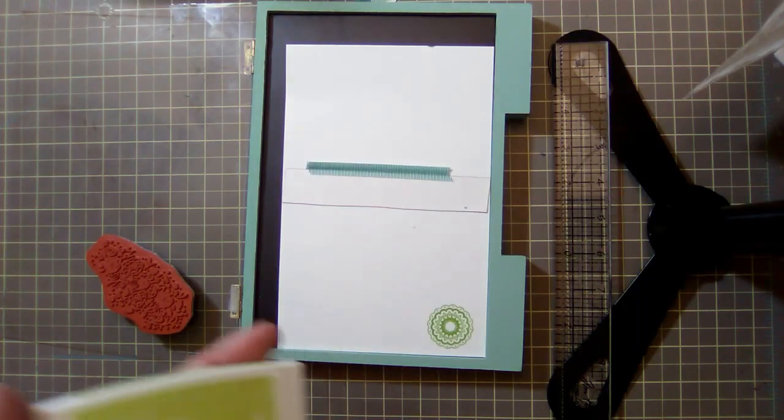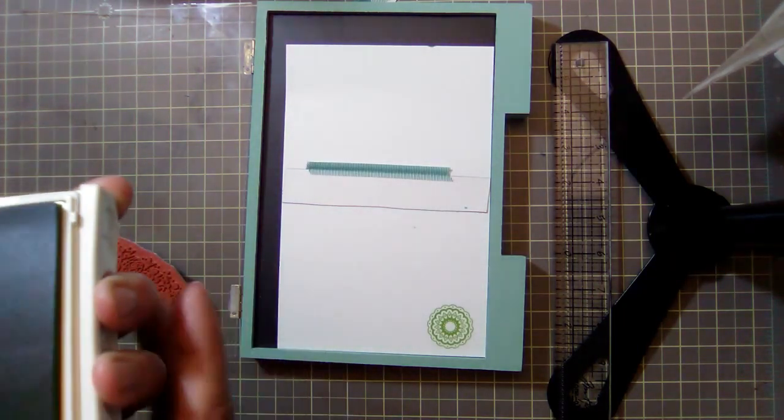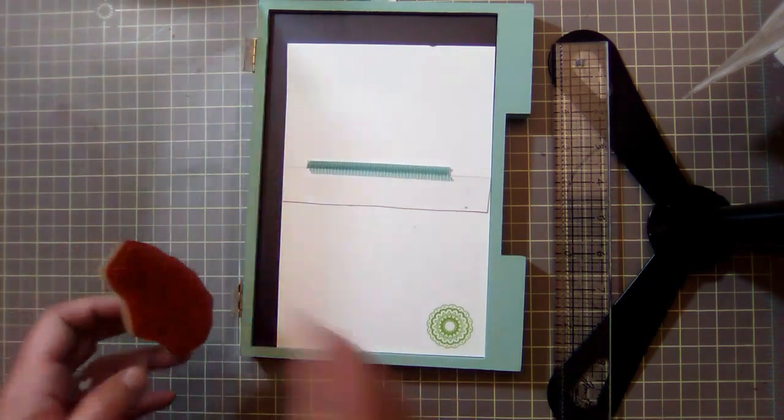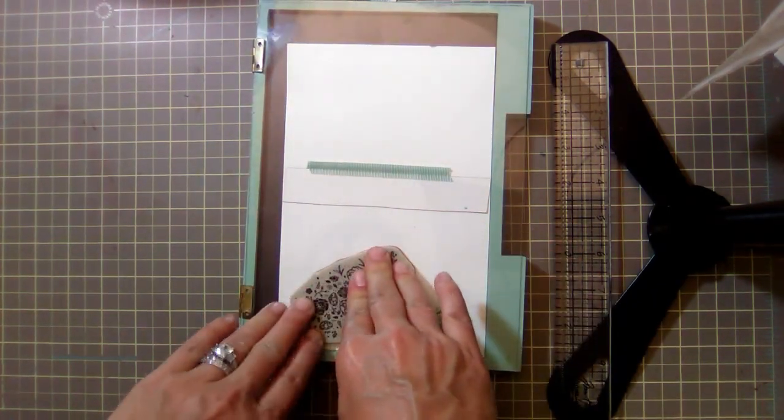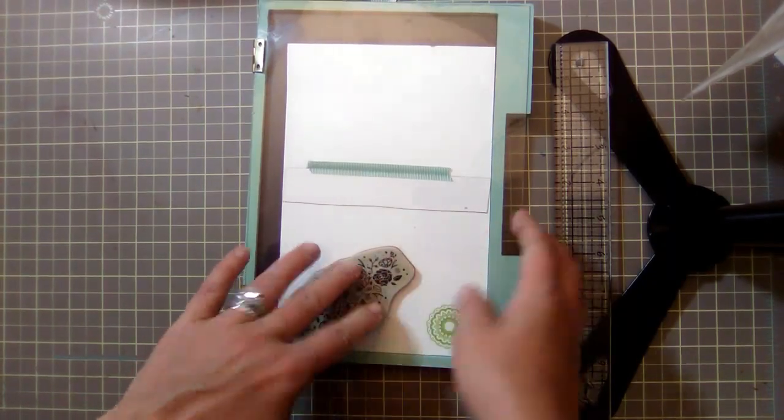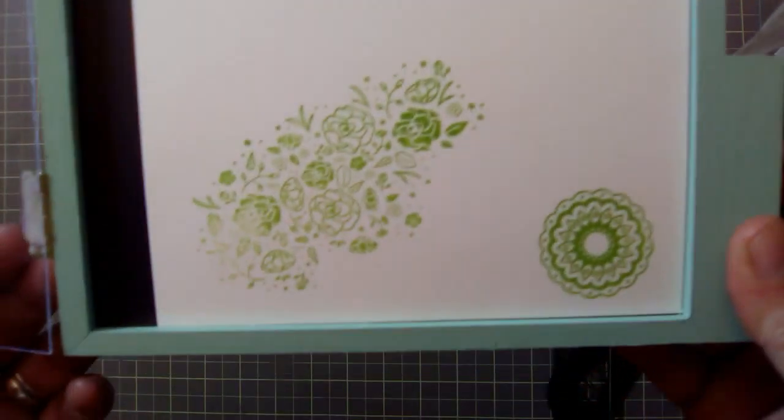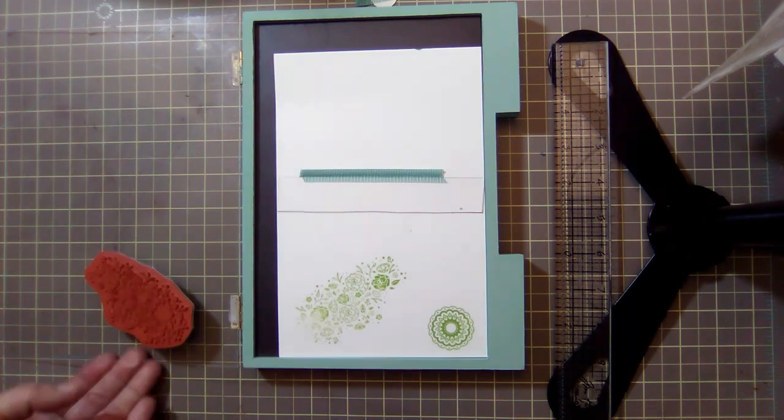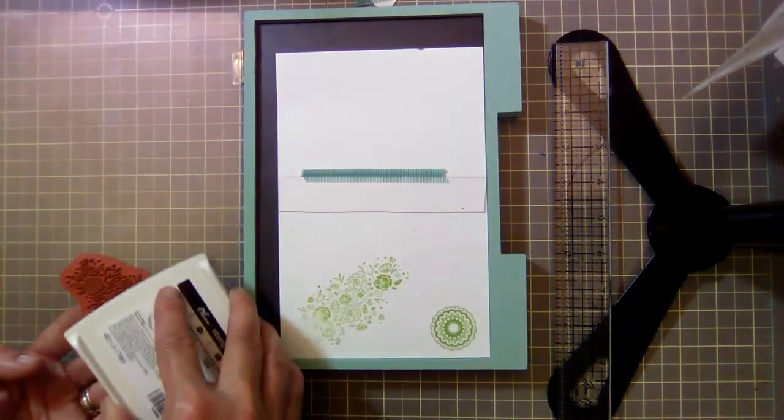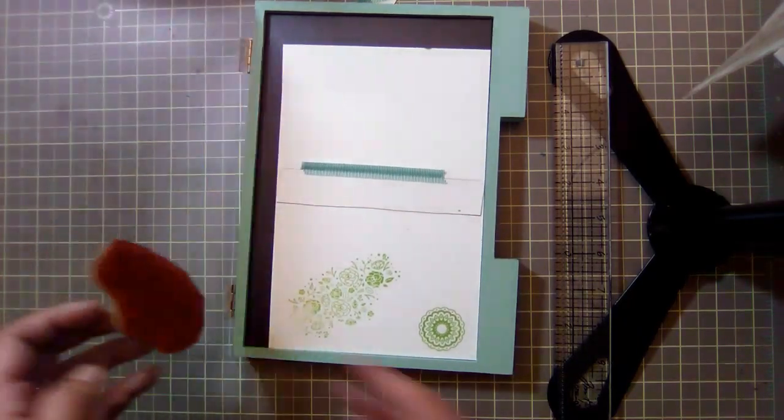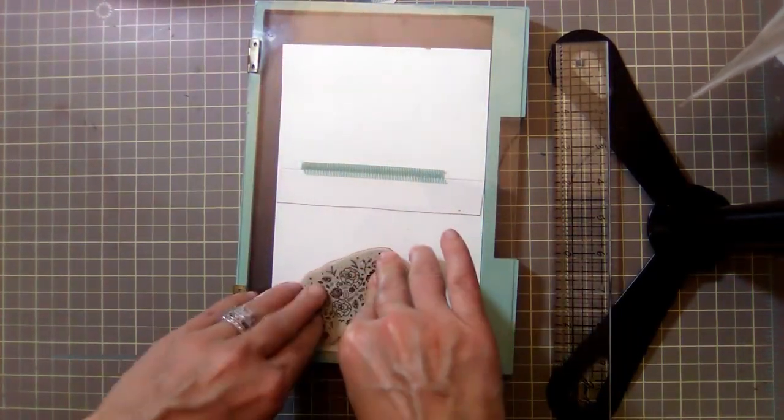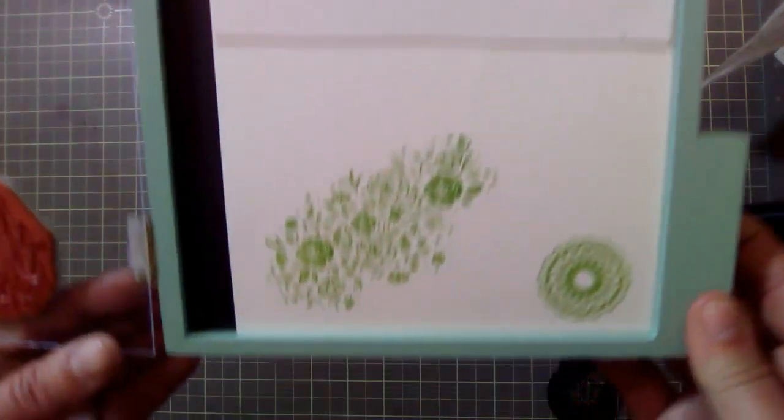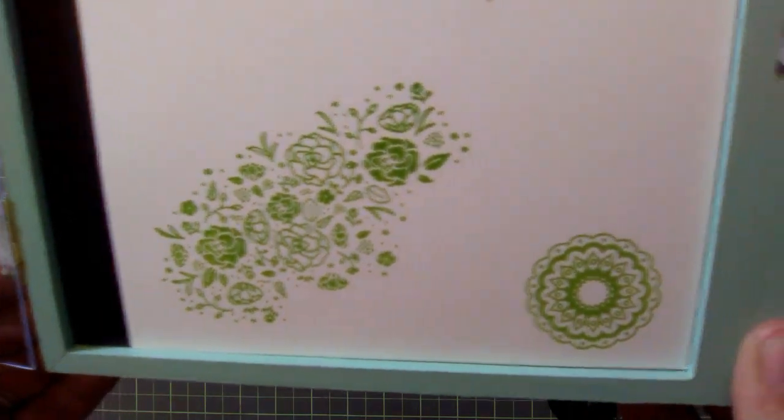And now we'll ink it again. Let's use Lemon Lime Twist again so that we can do it again. Okay, and then just press down. Okay, see how ugly that is right? Now let's ink it good and we'll do it again. And I've picked it up. I'm sorry, I don't need to shake y'all. I'm on that wrong end of the table.